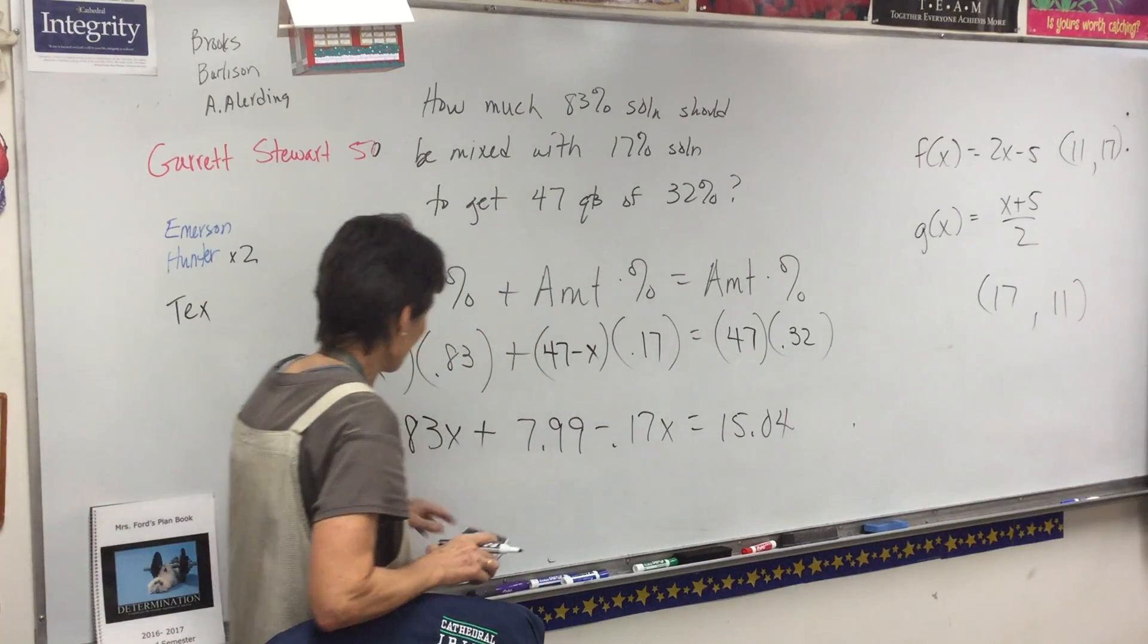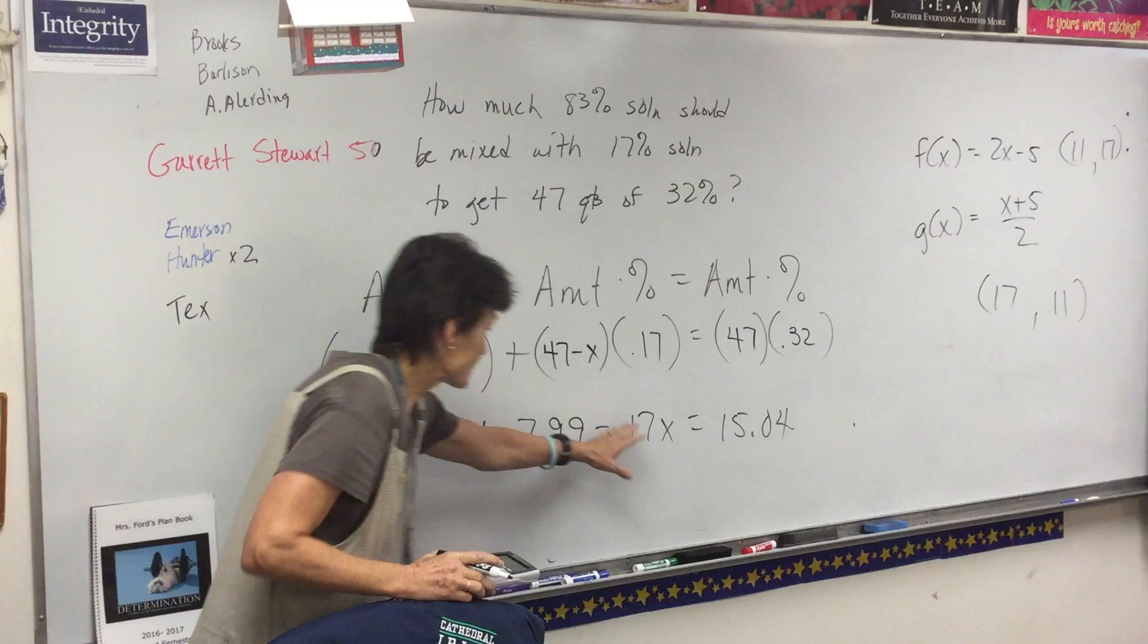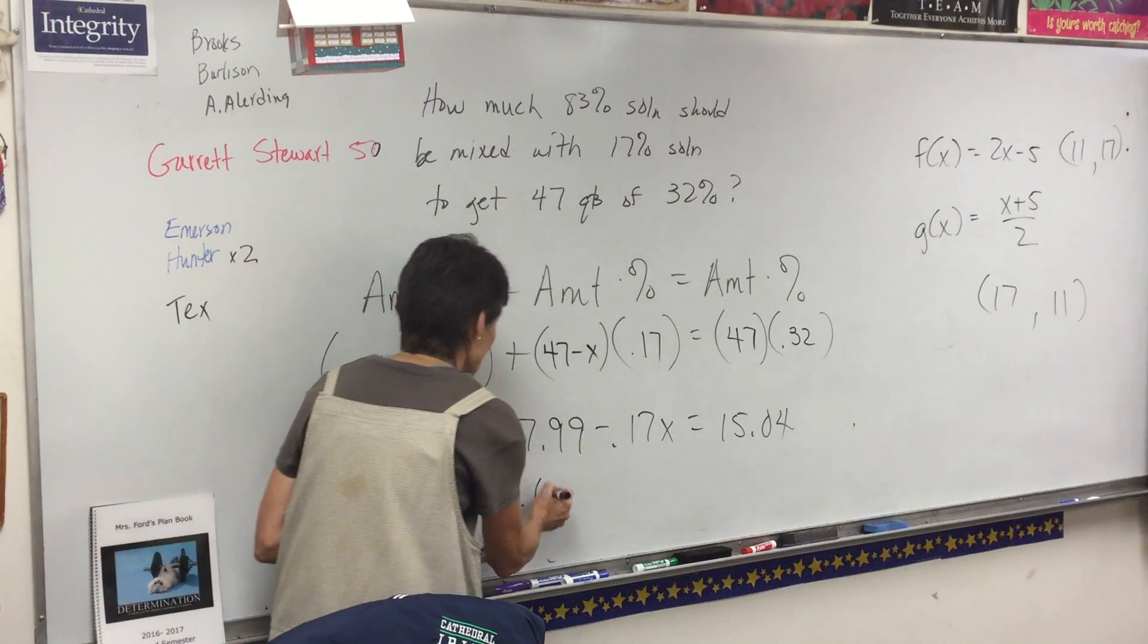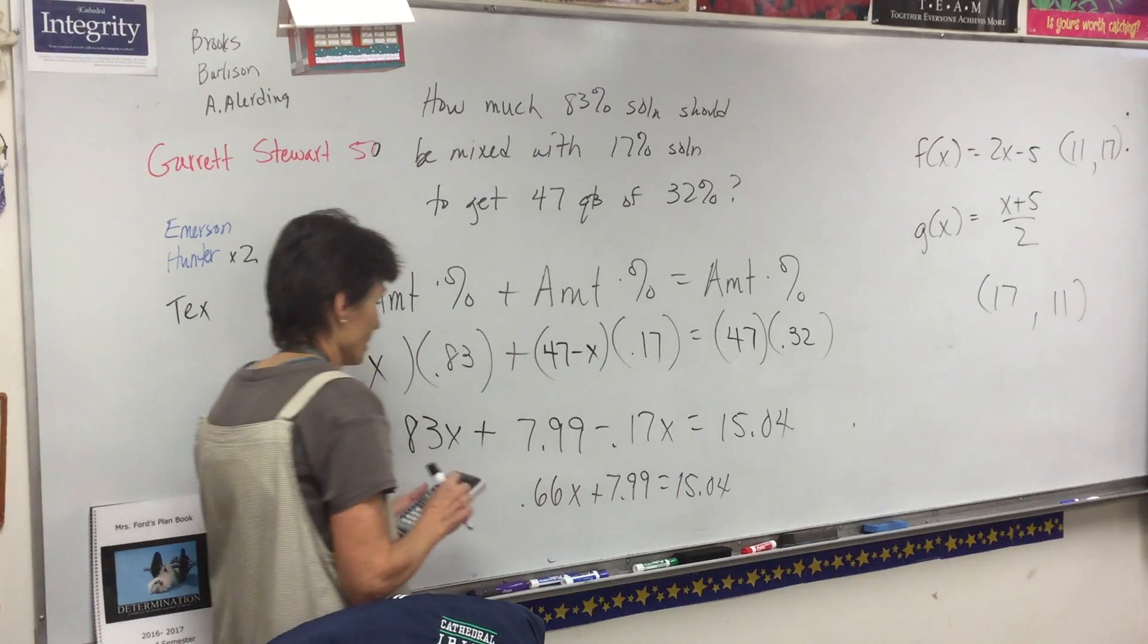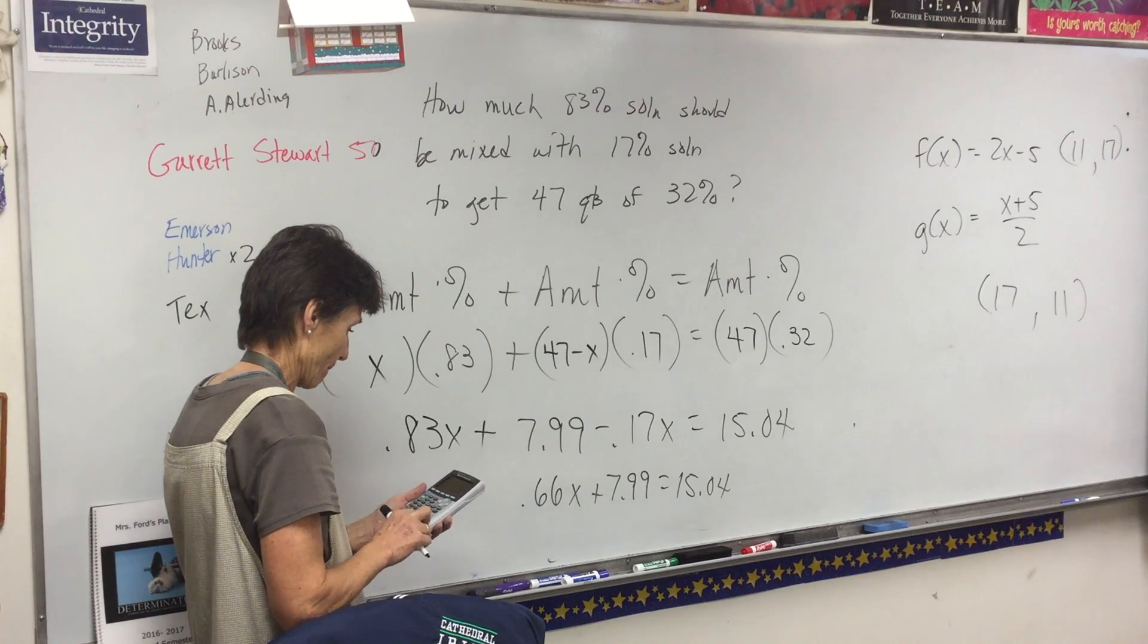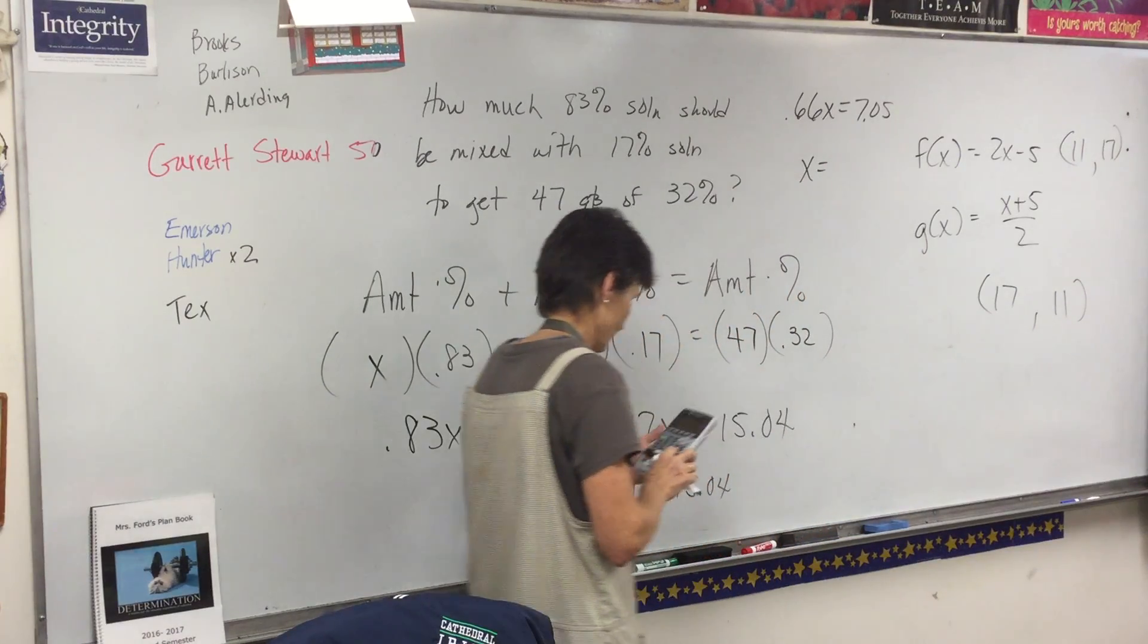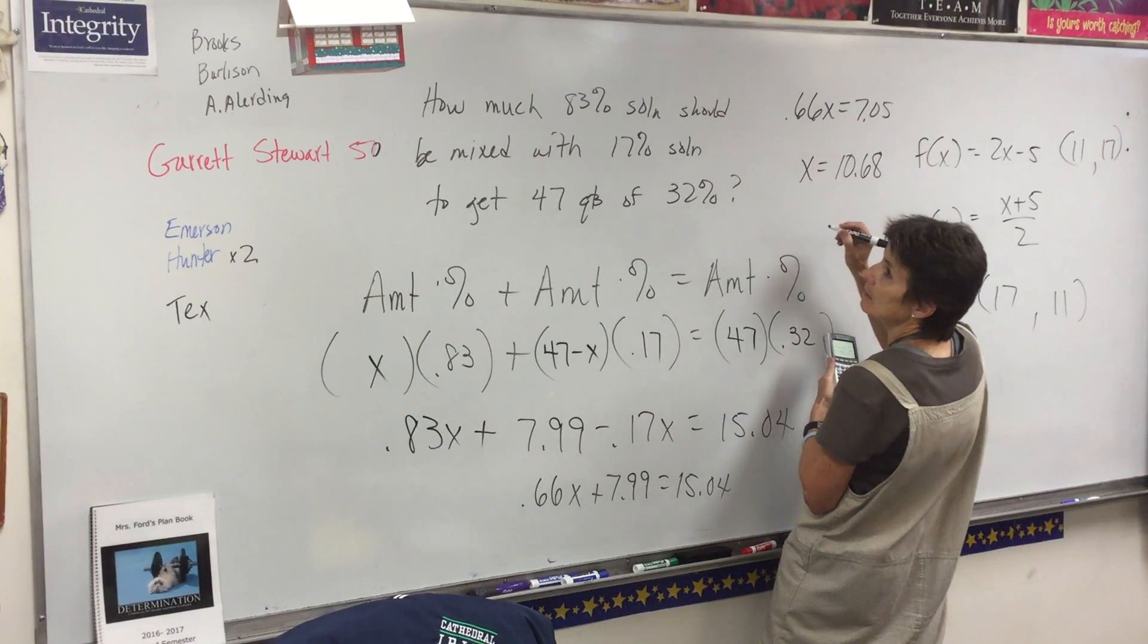There's also a little bit of difference here. These two x's are going to get combined and they're on the same side of the equation, so I have to combine these two. So 0.83 minus 0.17 is 0.66x plus 7.99. Now I'll subtract, and I have 0.66x equals 7.05, so I got about 10.68 quarts.